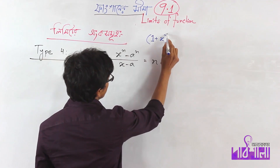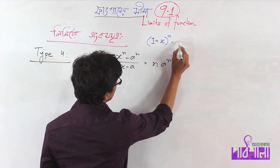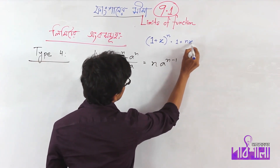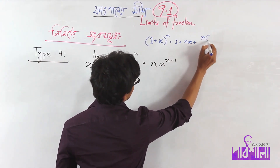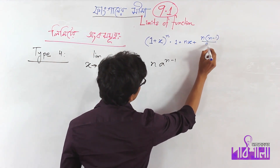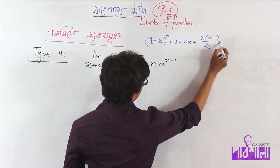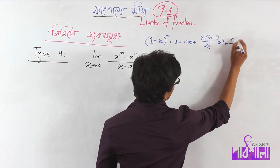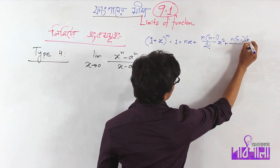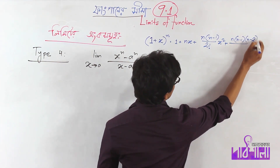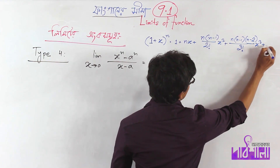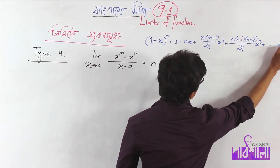The binomial expansion is: 1 plus nx, plus n(n minus 1) divided by 2 factorial times x squared, plus n(n minus 1)(n minus 2) divided by 3 factorial times x cubed, and so on to infinity.